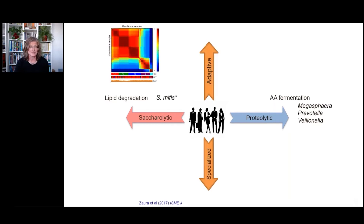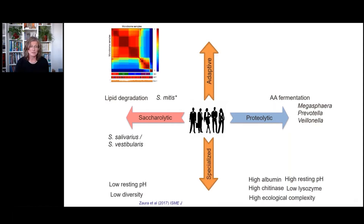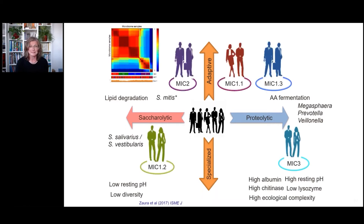What was most striking was a certain dichotomy in our groups: some ecosystems were more saccharolytic — breaking down sugars — and some were more proteolytic — breaking down proteins — related to different bacteria and different metabolites. We also found that some individuals were more specialized and some more adaptive. We ended up with five different ecological types: those on the left specialized in breaking down sugars, those on the right in breaking down proteins, and those in the upper part were adaptive and could do both.